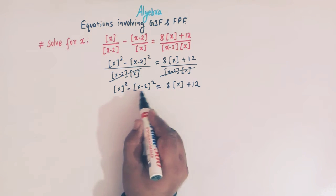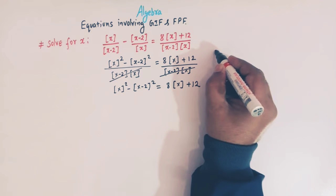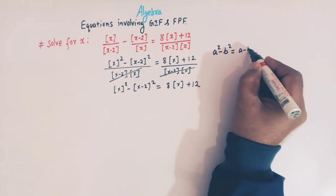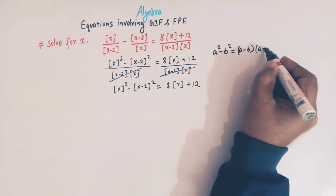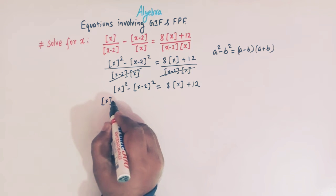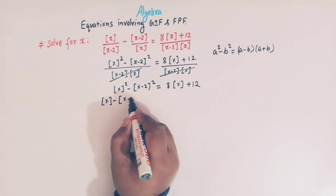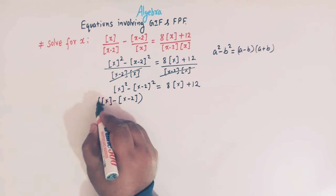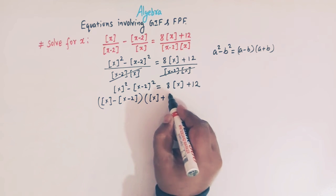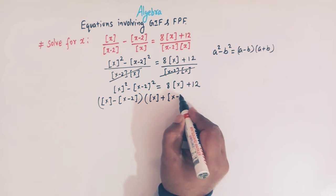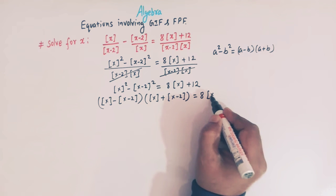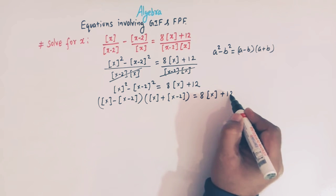Now we apply the property that a squared minus b squared equals (a minus b)(a plus b). So we have the factor: greatest integer of x minus greatest integer of (x minus 2), multiplied by greatest integer of x plus greatest integer of (x minus 2), set equal to 8 times greatest integer of x plus 12.